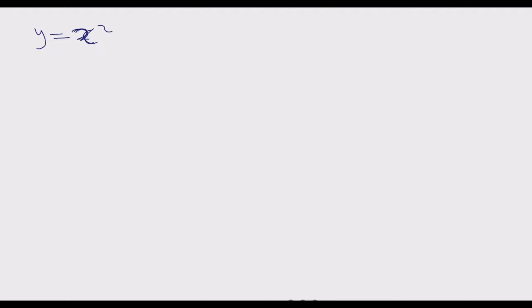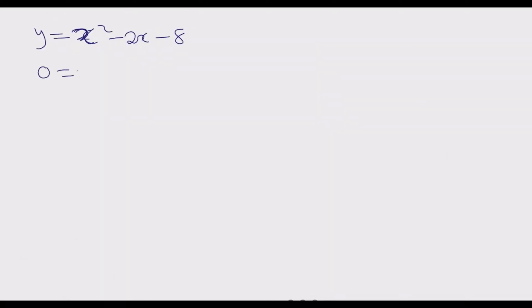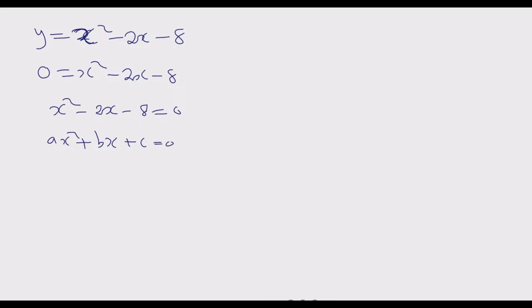Our function is y equals x squared minus 2x minus 8. We replace y with 0, because at the points of intersection A and B the value of y is 0. So 0 equals x squared minus 2x minus 8, which gives us the quadratic equation x squared minus 2x minus 8 equals 0, with a equals 1, b equals negative 2, and c equals negative 8.